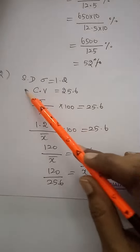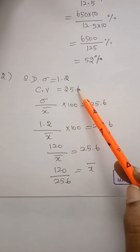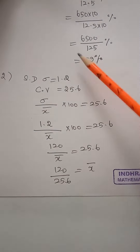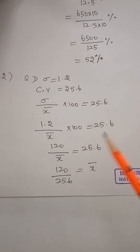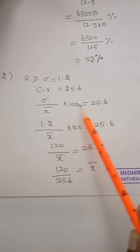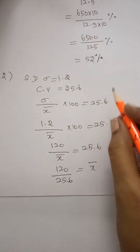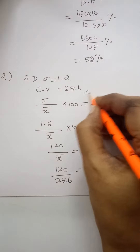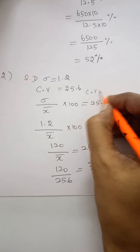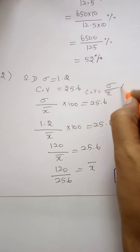Standard deviation sigma and CV are connected through the formula: sigma divided by x bar, into 100, equals CV.